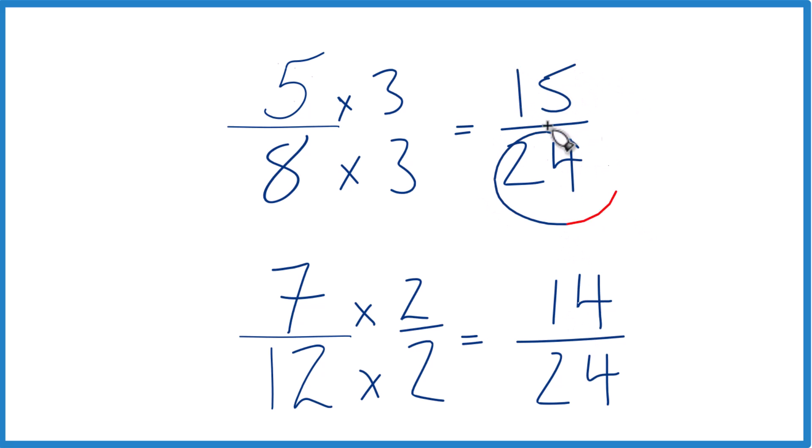Since we have the same denominator, we can just compare the numerators. 15 is greater than 14, so 15/24 is greater than 14/24, only by 1/24, but it's still greater. And since these are equivalent fractions with the same value, 5/8 is also greater than 7/12.